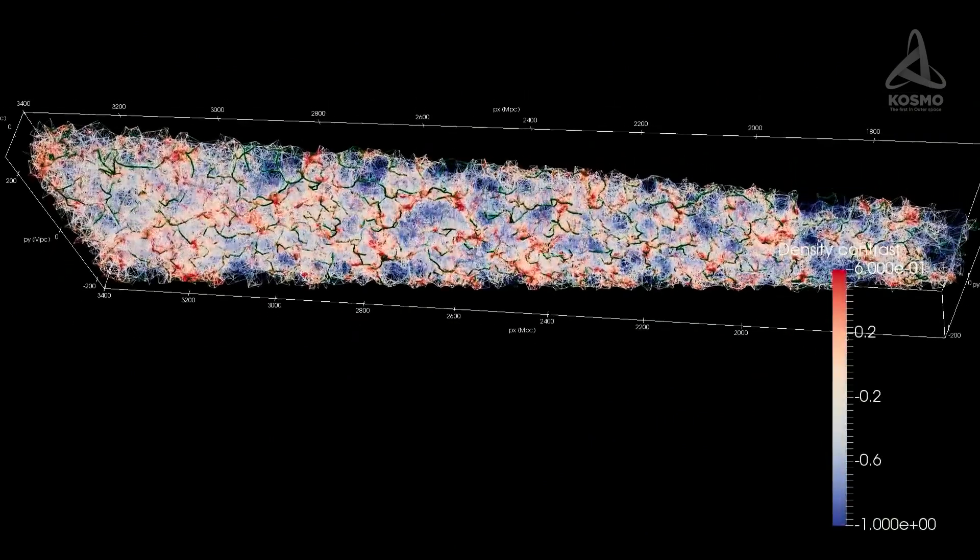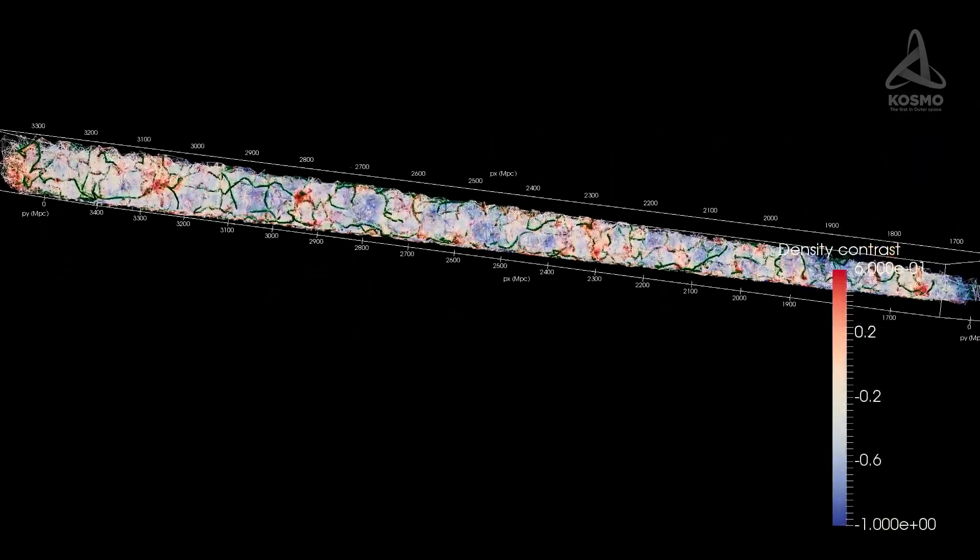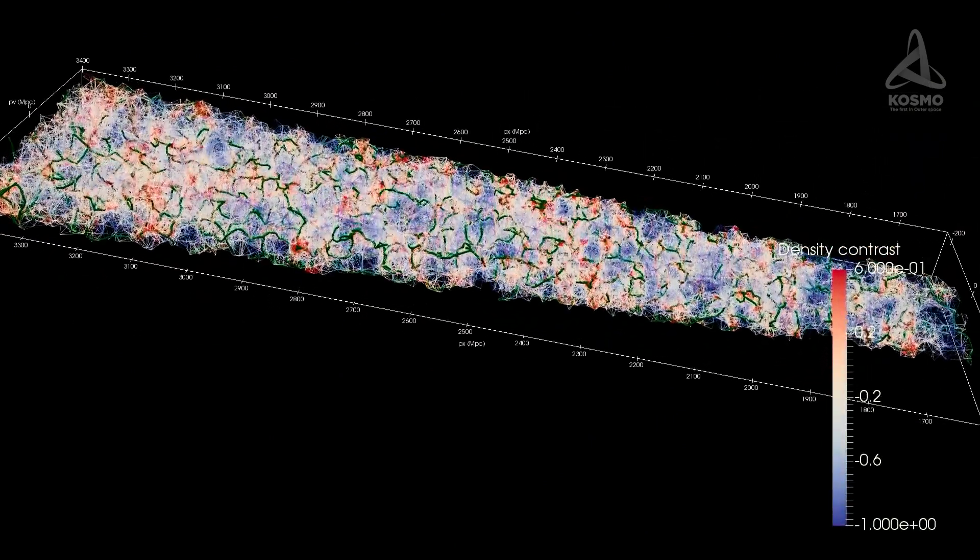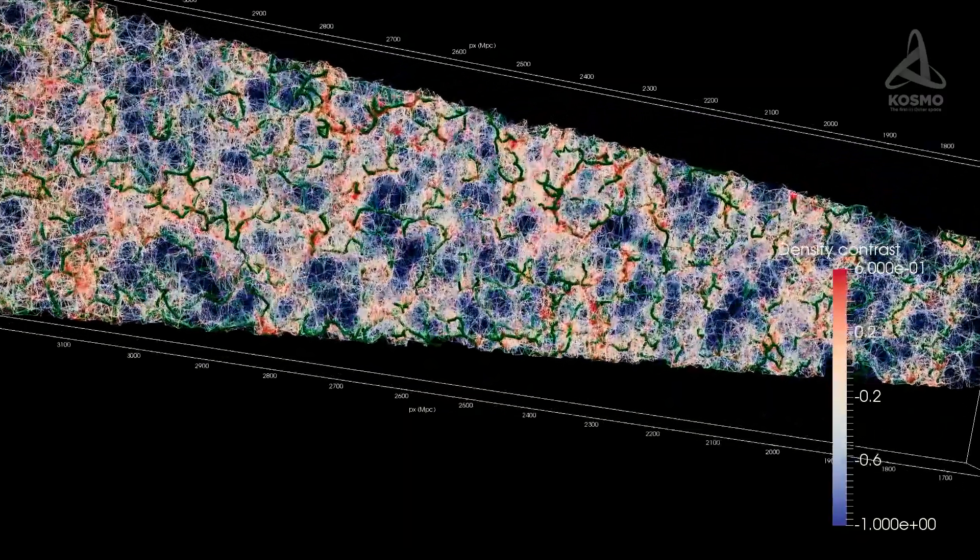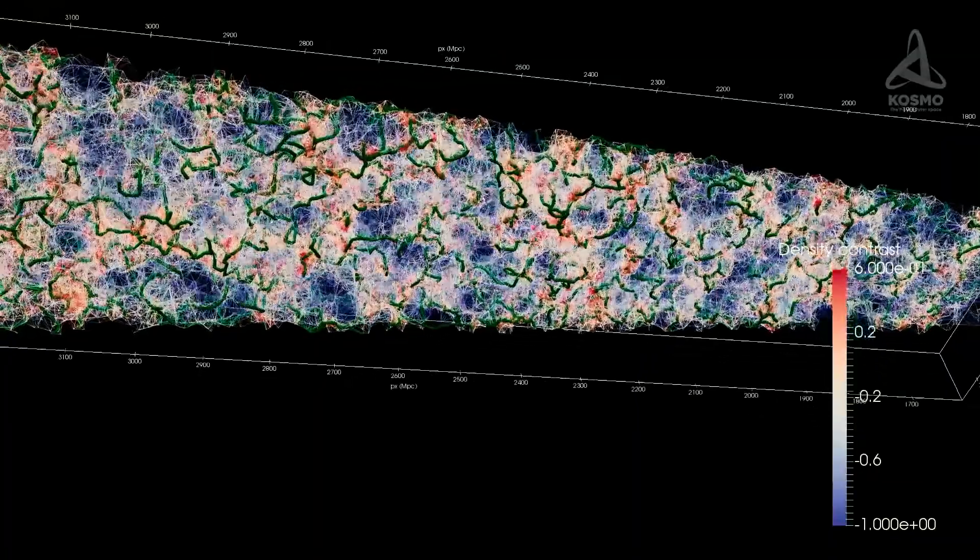However, on discovering the dark flow anomaly, we realized that these phenomena don't fit in the general picture. The dark flow isn't supposed to exist in the model of an isotropic universe.